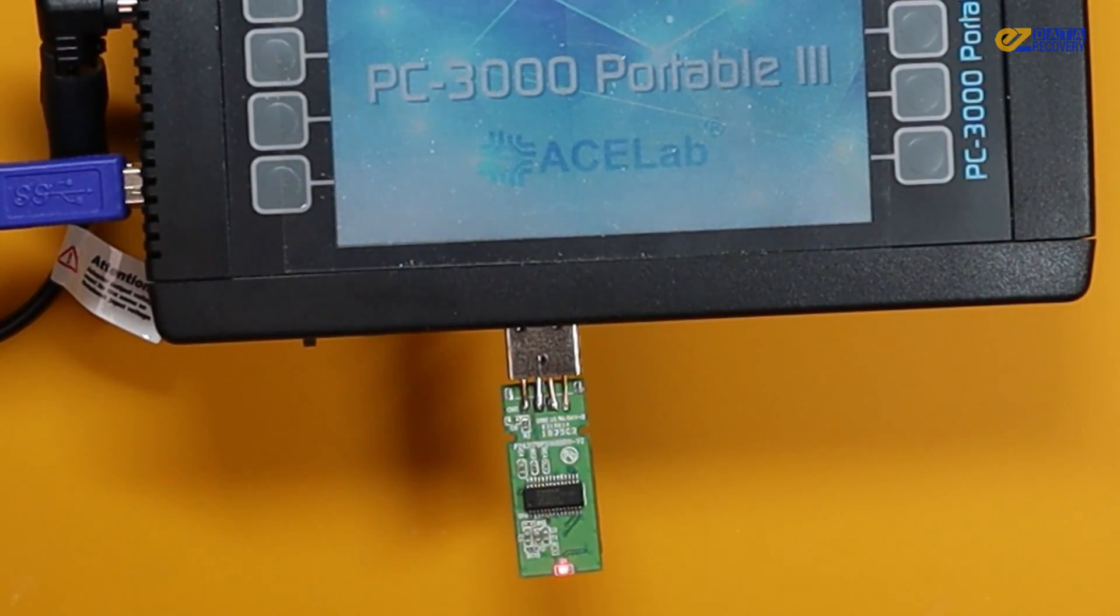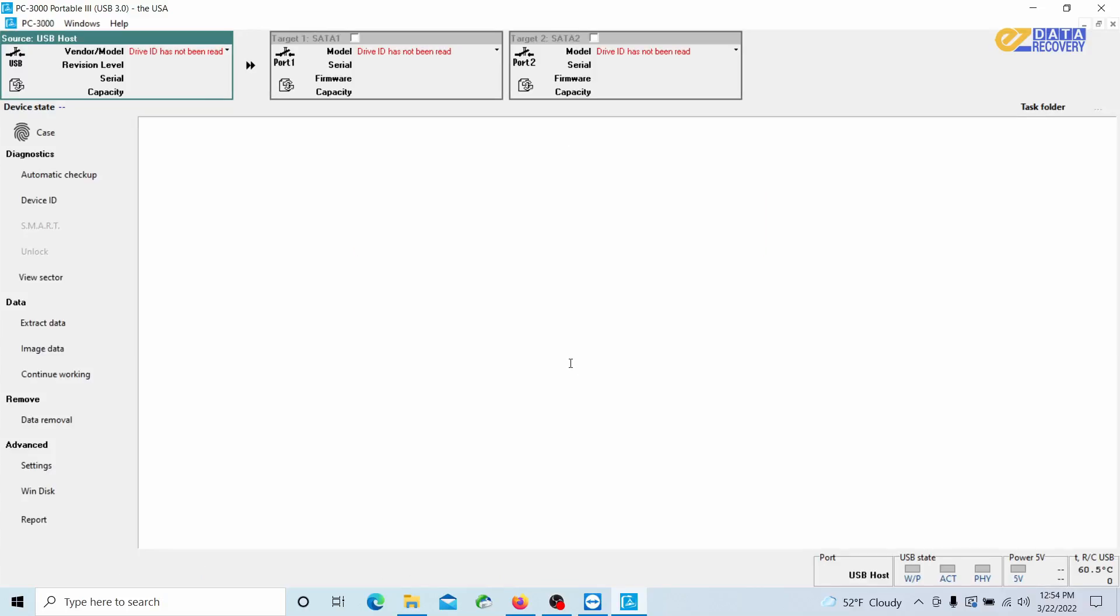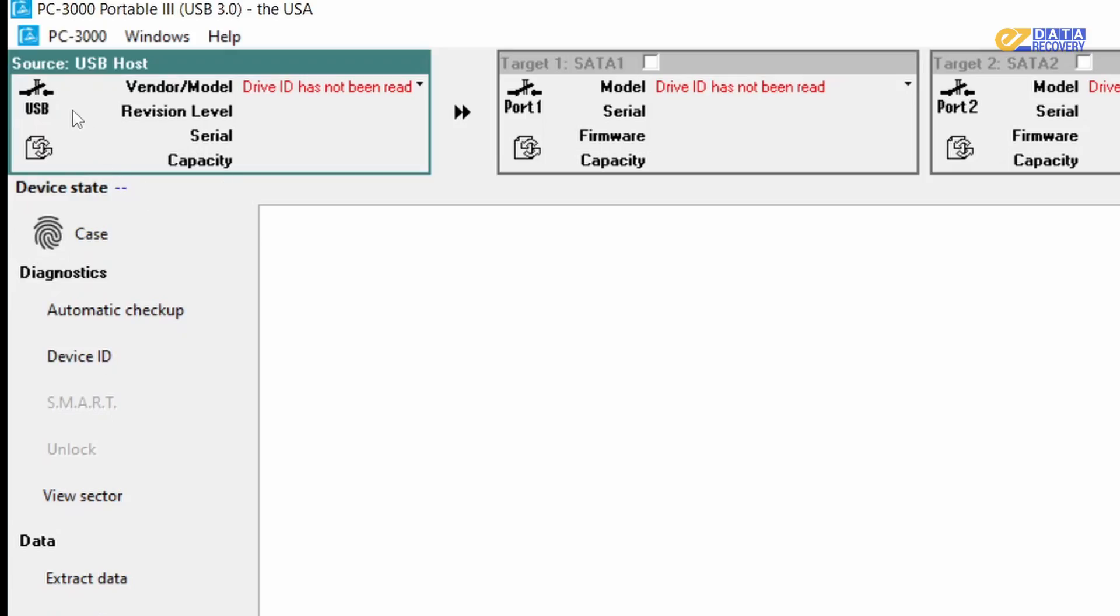And it's detecting it. Perfect. So let's open up the software for PC3000 portable. Okay, we have it open. We're going to turn it off and turn it back on. And let it scan.